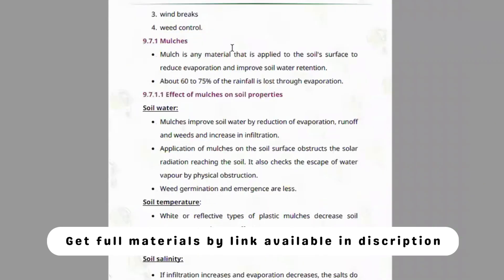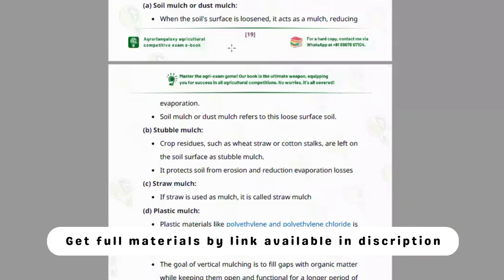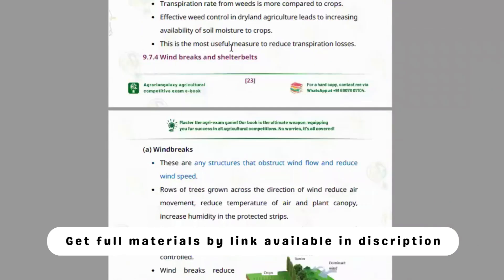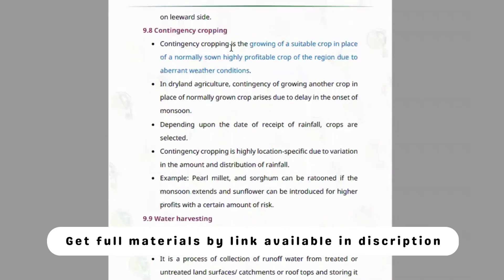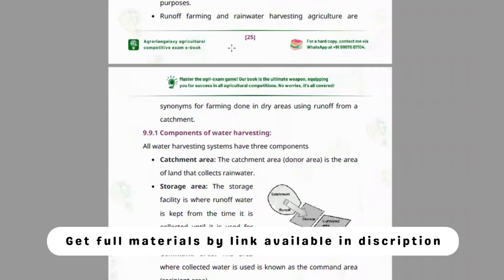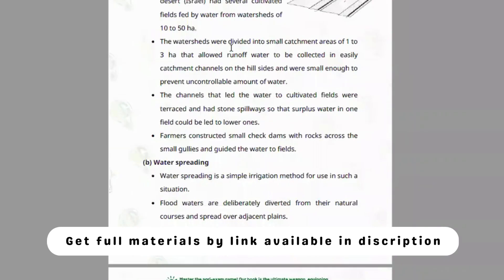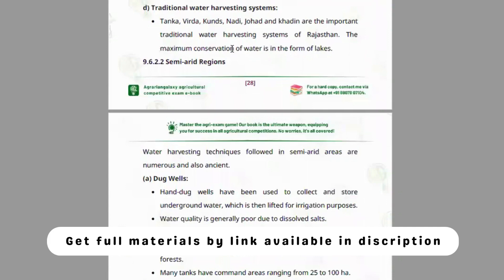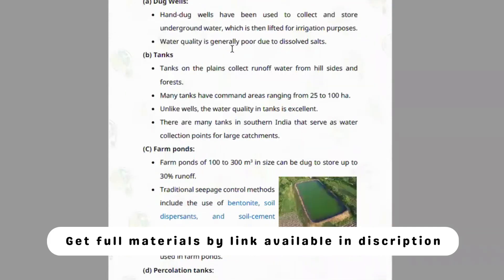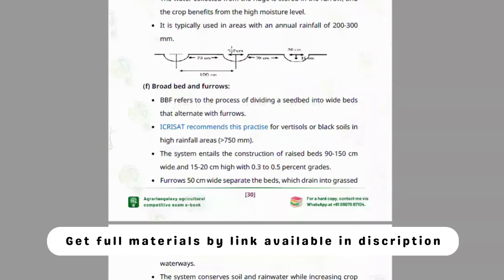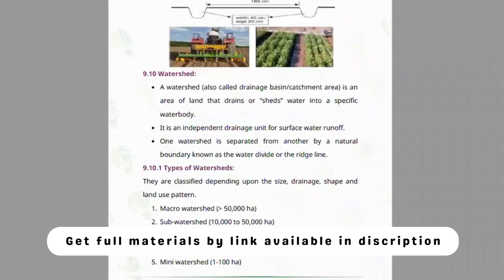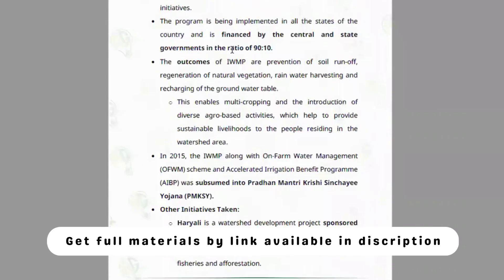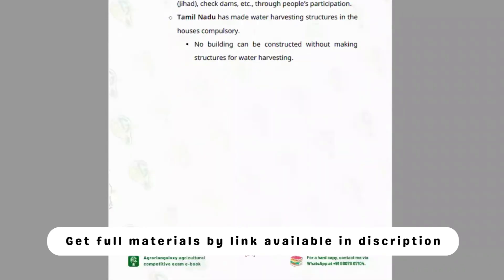Drought tolerance, crop adaptation for dry growing conditions, types of mulches, anti-transpirants, windbreaks, and shelter belts are covered. Water harvesting is also included — components and methods of water harvesting, runoff water spreading, micro-catchments, traditional water harvesting systems in semi-arid regions, farm ponds, and programs related to water harvesting — all within this module.